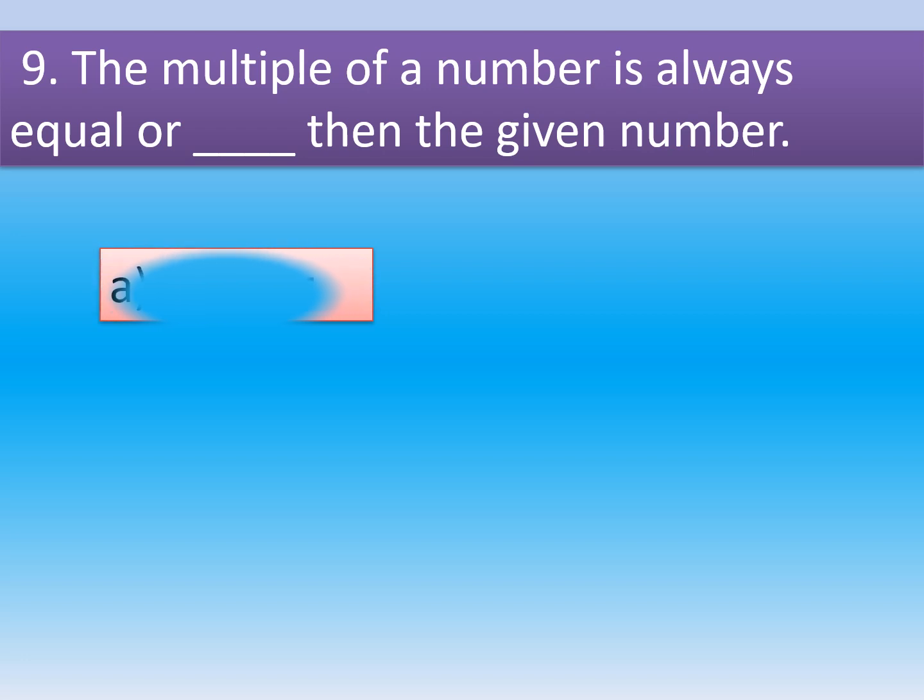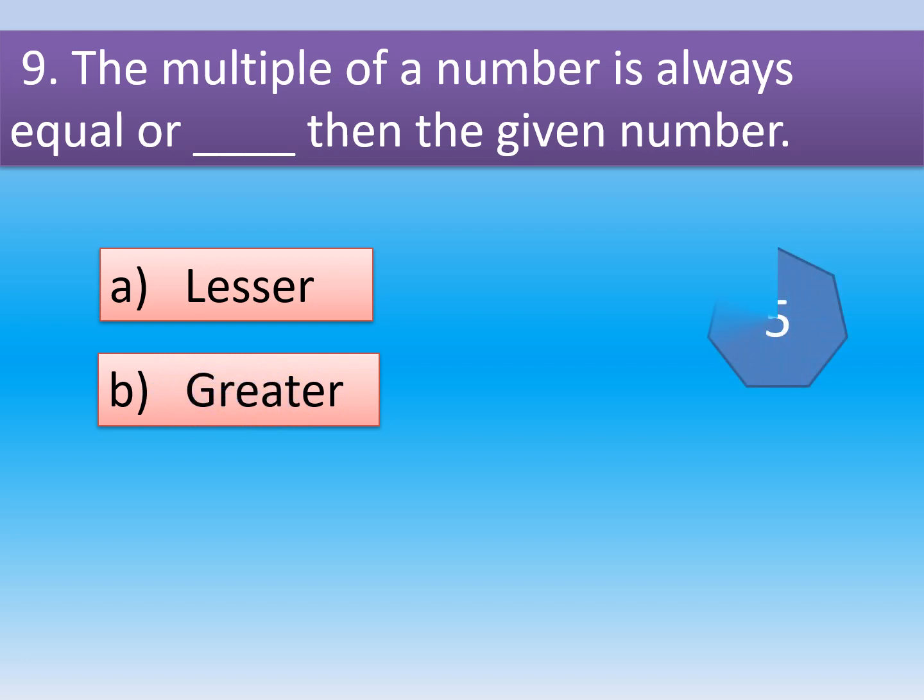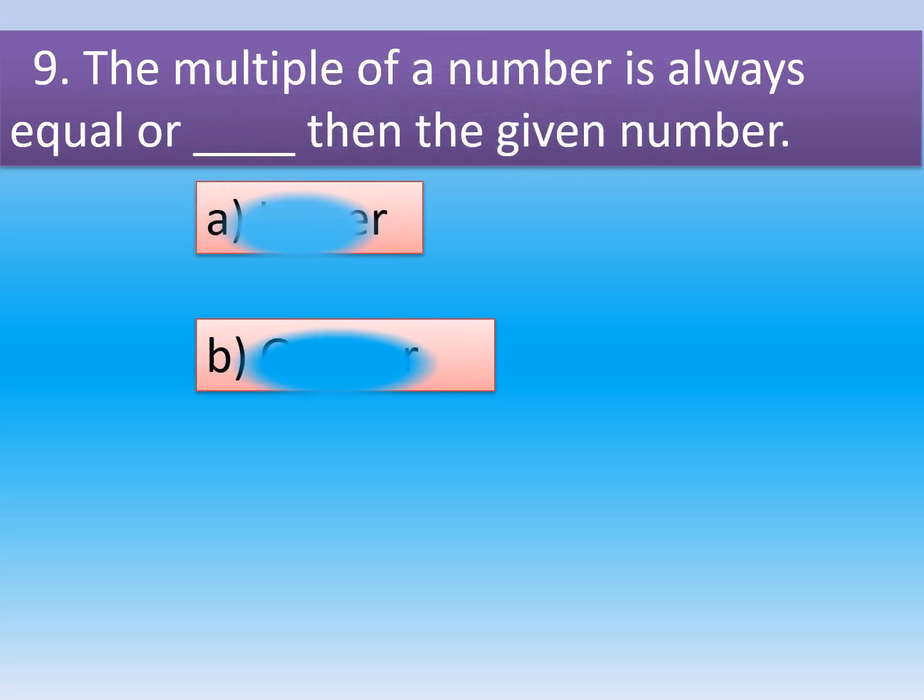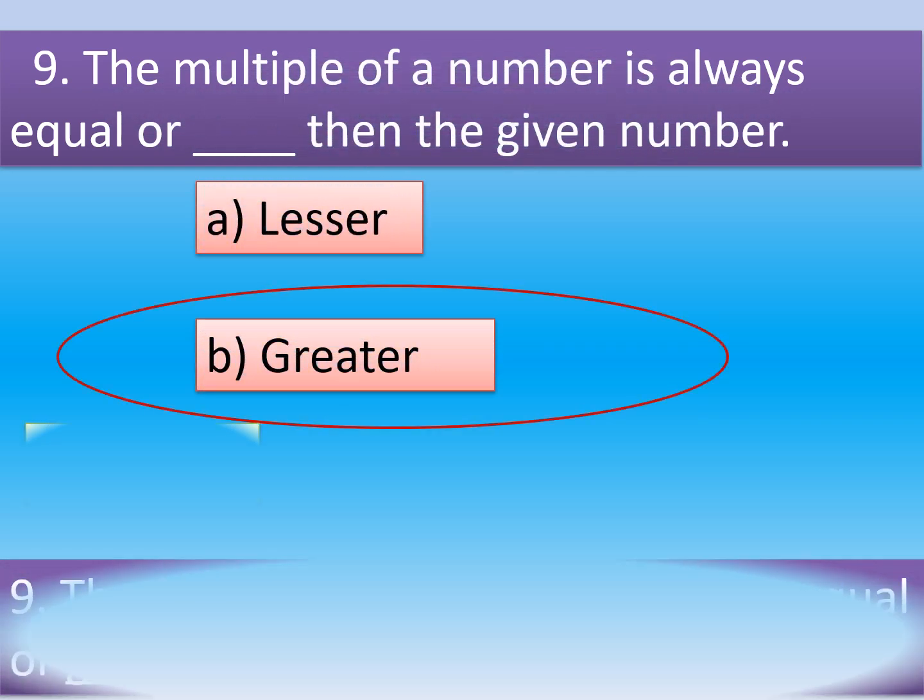Question number 9: The multiple of a number is always equal or dash than the given number. Option A, lesser. Option B, greater. The correct option is Option B, greater.